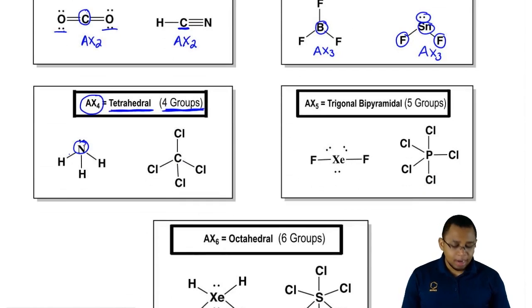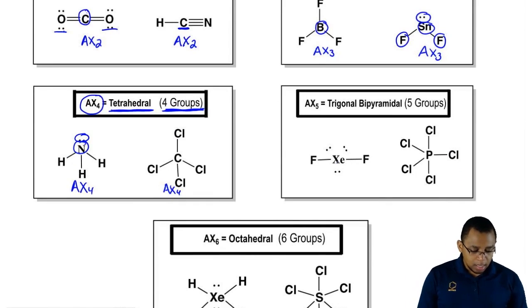Here nitrogen is surrounded by a lone pair and three surrounding elements, AX4. Carbon here would be AX4.